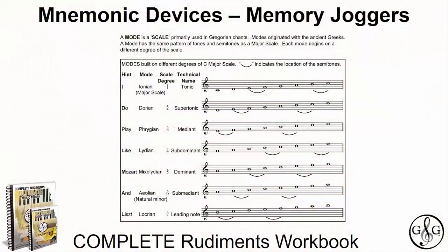Mnemonic devices are memory jogger techniques that you can use to help you improve your ability to remember something. In other words, it's a memory technique to help your brain better encode and recall important information. Now in the complete rudiments workbook, you're learning about modes. A mode is a scale that has the same pattern of tones and semitones as a major scale.